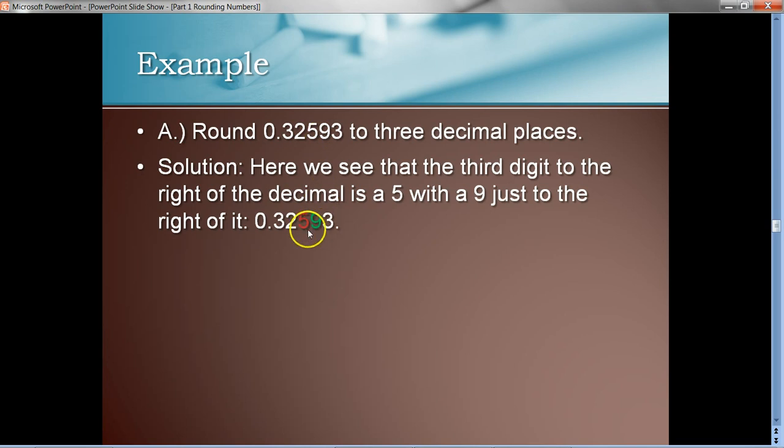and just to the right of that is a nine. All right? I'll show it down here. Here's the place we're rounding to, thousandths place, or three decimal places. So, just to the right of that, we have a nine. That number is, what, five or more. So, we want to make the next number bigger, the red one there, three decimal places. So, rounding to three decimal places, that would be 0.326.